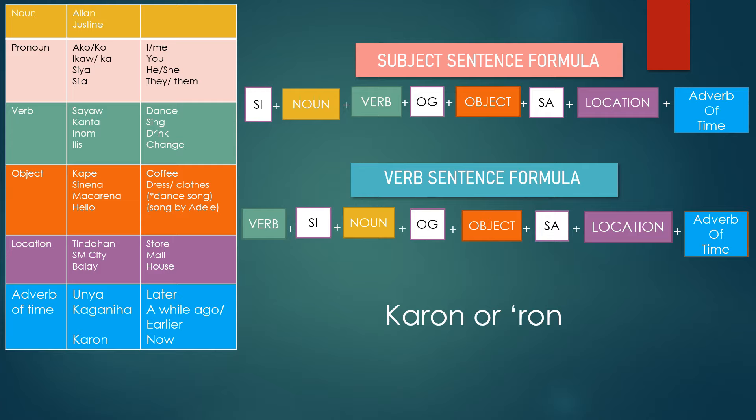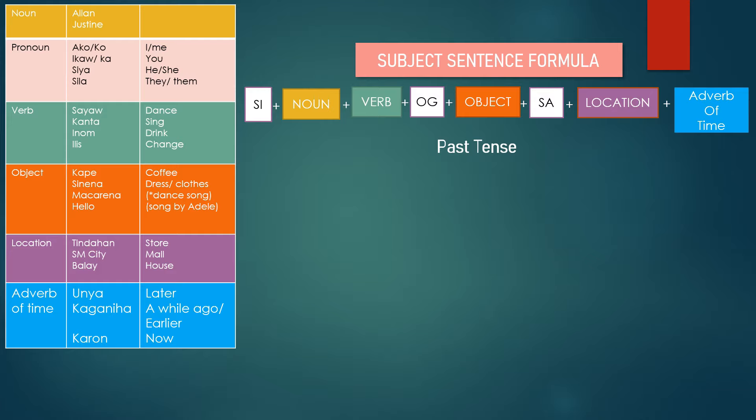Sometimes Karun is shortened to Ron — it depends on the local. You may hear Ron only instead of Karun. We will still be using the same sample sentence from parts 1 and 2, using the subject sentence formula in past tense.